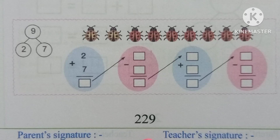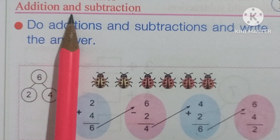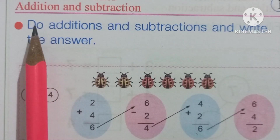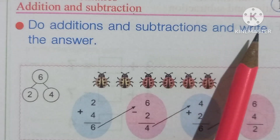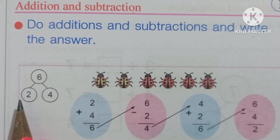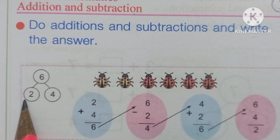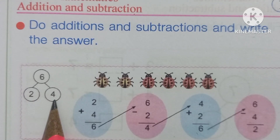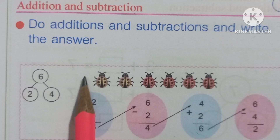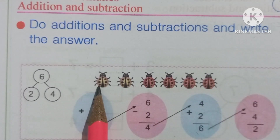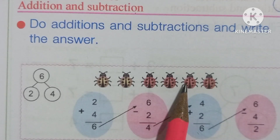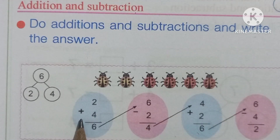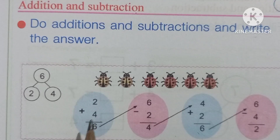Page number 229 — Addition and Subtraction. Do additions and subtractions and write the answer. Here are 3 numbers: 2, 6, and 4. Here are 6 insects — count them: 1, 2, 3, 4, 5, 6. So 2 plus 4 equals 6.